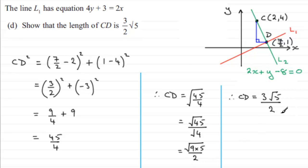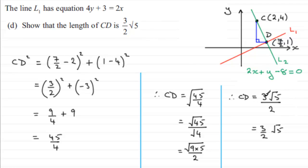So there you go — CD equals 3 root 5 over 2, as we had to show. It finishes exactly in the same format that they asked us to find it in. I hope that's given you some idea if that caused a few problems.